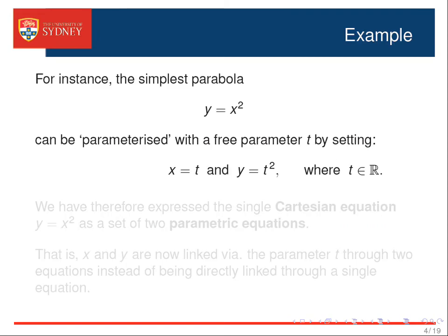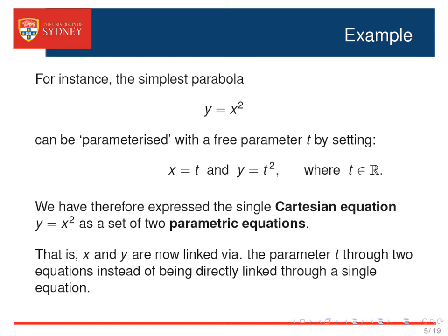Let's look at an example. Consider the function y equals x squared. This simple parabola can be parameterised with a free parameter t by setting x equals t and y equals t squared. The parameter t is referred to as free because it can take the value of any real number. We have therefore expressed the single Cartesian equation y equals x squared as a pair of two parametric equations.